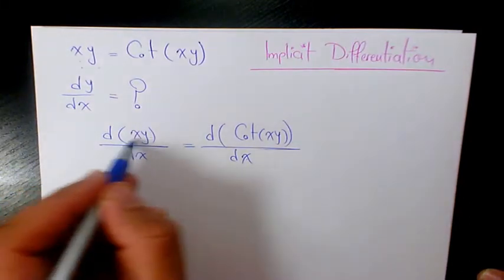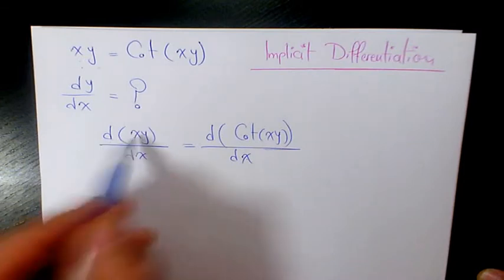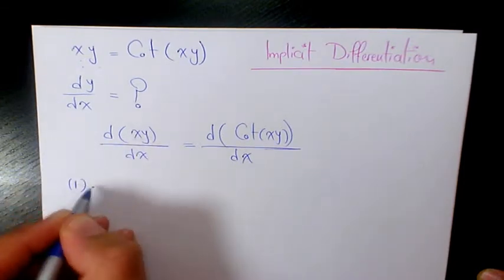Here we need to use the product rule. The derivative of x is going to be 1 times y plus x times the derivative of y with respect to x.